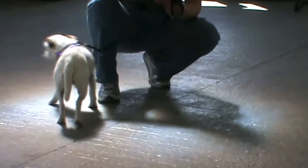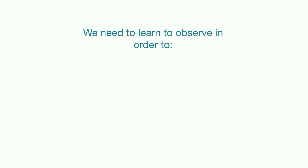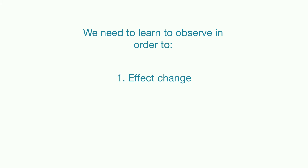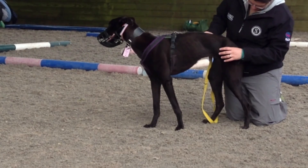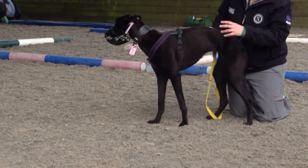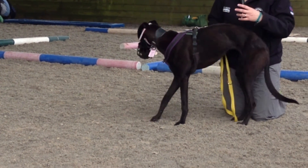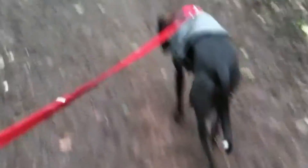We need to observe in order to both affect change and recognize change. Observing where there is tension can guide us in which areas of the body we want to work on, and it can also act as a barometer for how we or our dog is changing over time.